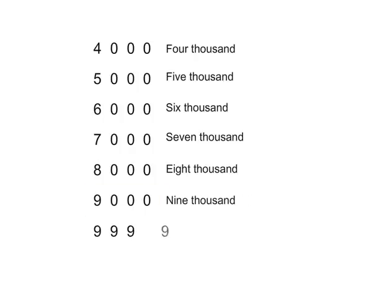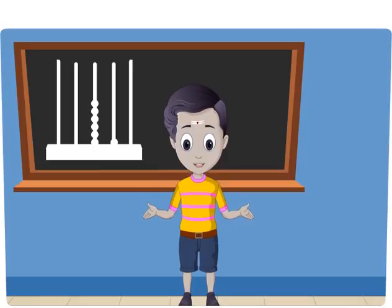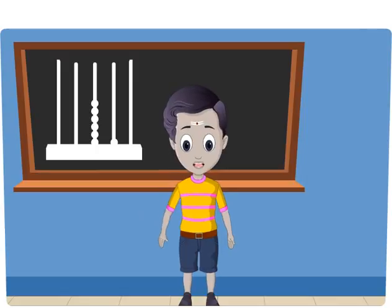9,9,9,9 is read as 9,999. 9,999 is the greatest number of 4 digits. Let us use an abacus to learn numbers and number names.